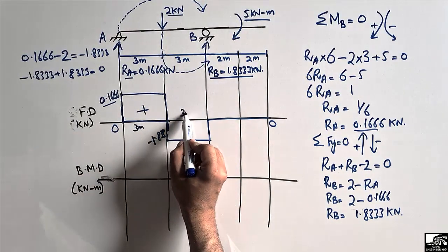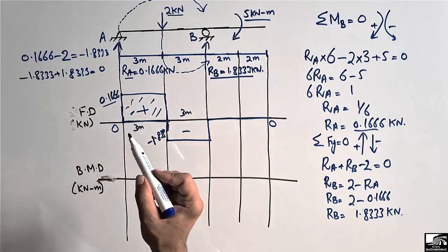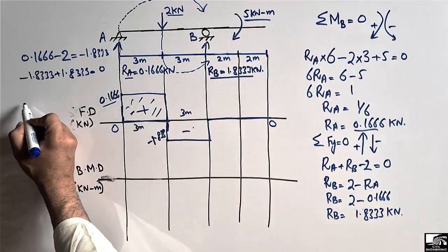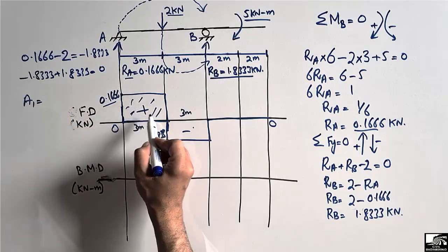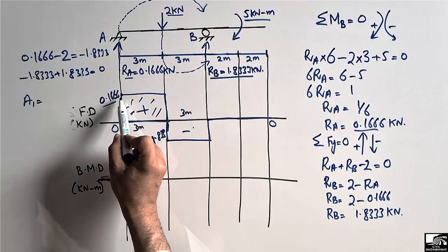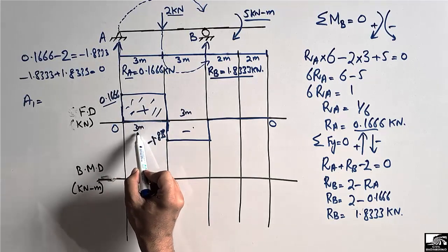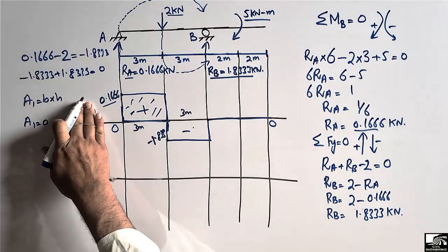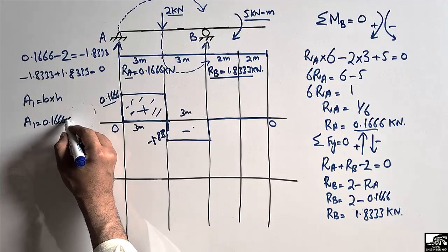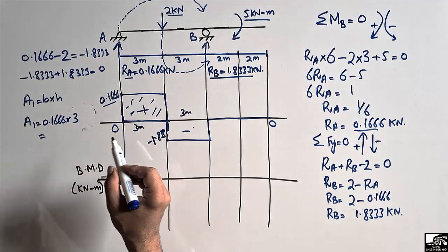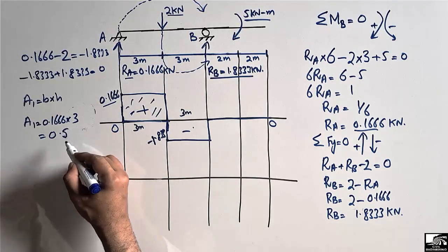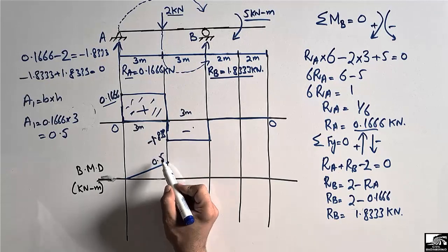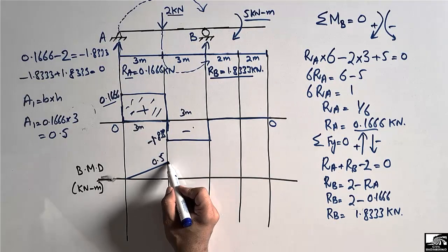The bending moment can be found by calculating the area of the shear boxes. For the first shear box, A1, the height is 0.1666 kN and the base is 3 meters. Area equals base times height, so A1 equals 0.1666 multiplied by 3, which gives 0.5. This area of 0.5 kNm is the bending moment value at that point.